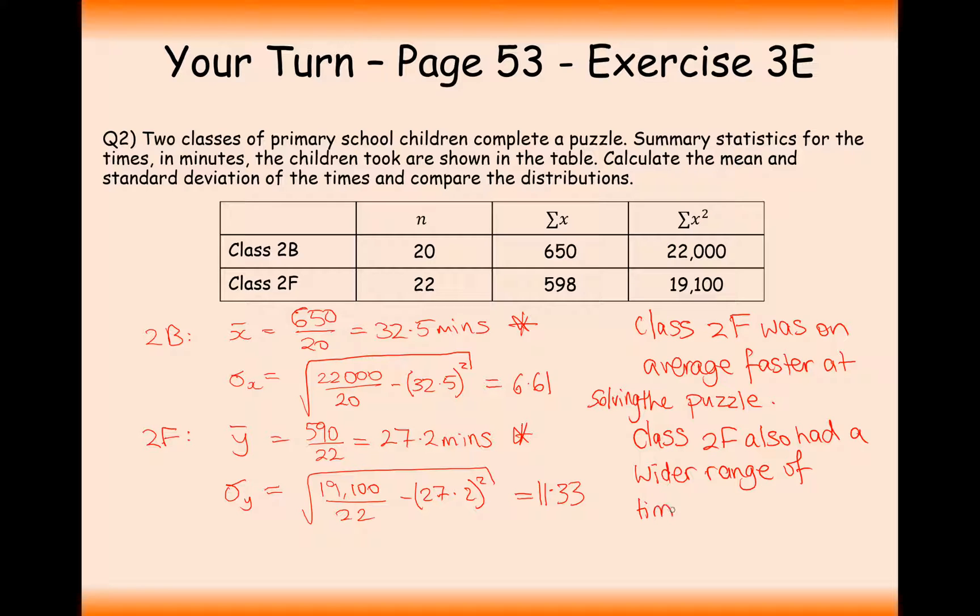Always try and link it back to the context of the problem here. You can see that I've written 'was on average faster at solving the puzzle' because that's what this question is banging on about. Always try and link it back to the context of the question. Don't just say the mean is higher and the spread of data is higher. That's not really that useful. Try and link it back to the context of the question.